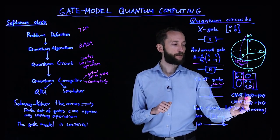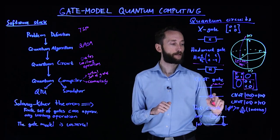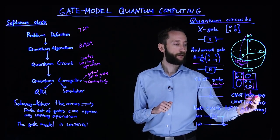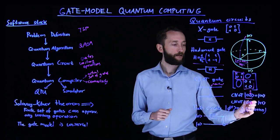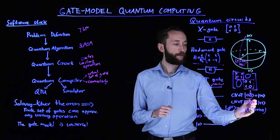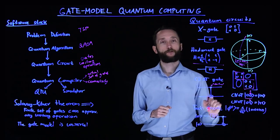So for instance, if you take this qubit state, the zero, zero state, where this is the control, then nothing happens because the control was not applied. On the other hand, if the control is flipped on, then it's going to flip the other qubit to one.